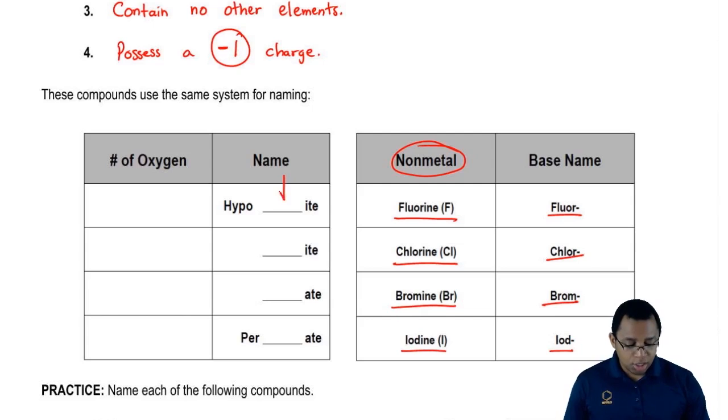Those base names are going to be positioned in each of these blanks here. That's what goes in each one of these blanks, the base name. We're going to say based on the number of oxygens present, that's going to determine the name of our polyatomic ion.